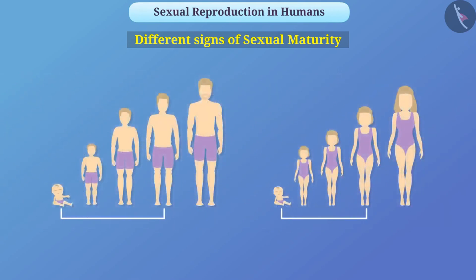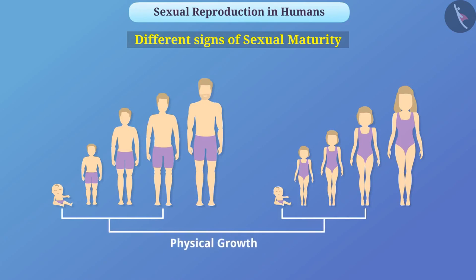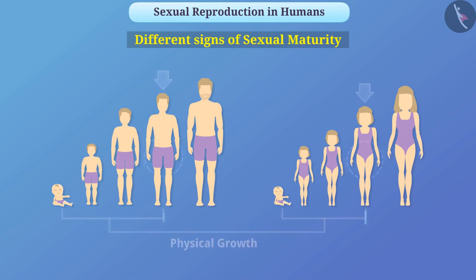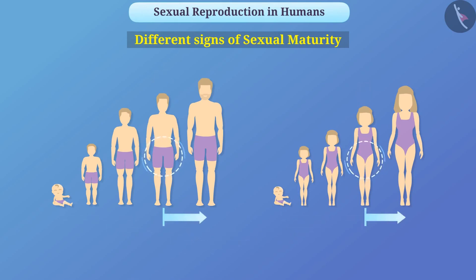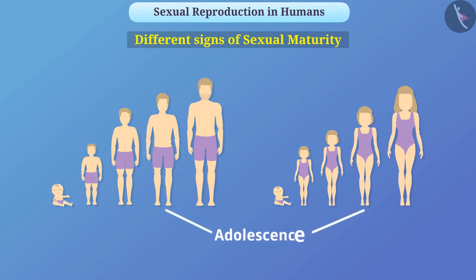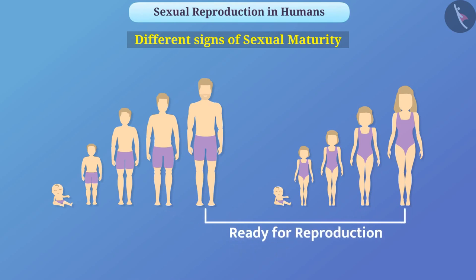From birth to adolescence, the body primarily focuses on physical growth. But as the rate of physical growth slows down in the early years of adolescence, the reproductive tissue begins to develop. This period of adolescence is called puberty. Males and females become ready for reproduction after sexual maturity.